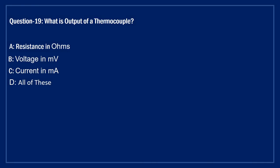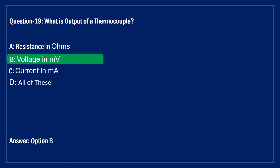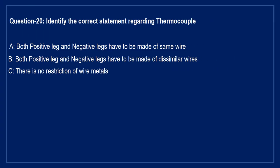What is the output of a thermocouple? Option A: resistance in ohms. Option B: voltage in millivolt. Option C: current in milliampere. Option D: all of these. The right answer is Option B — the output of a thermocouple is voltage in millivolt.